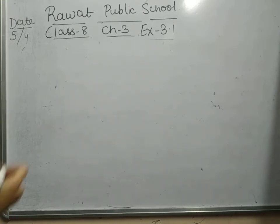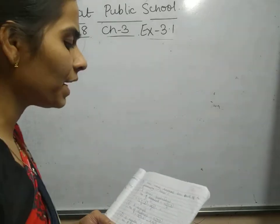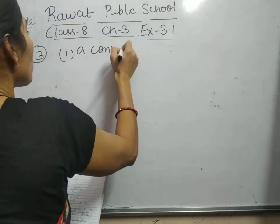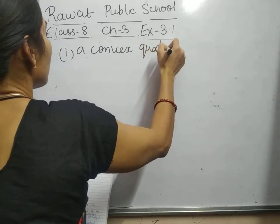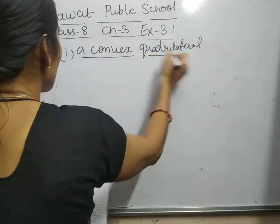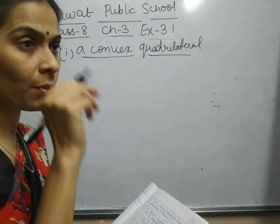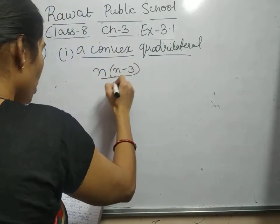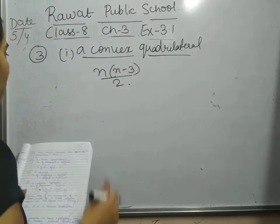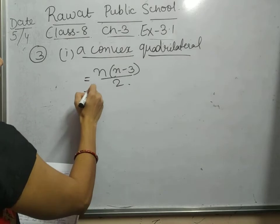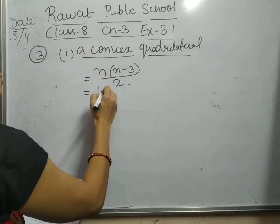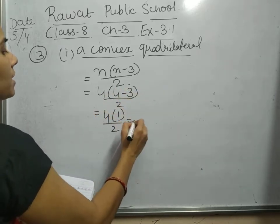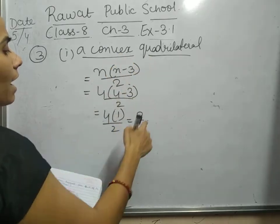Question 3 asks how many diagonals each polygon has, using the formula n(n−3)/2. For a convex quadrilateral (n=4): 4×(4−3)/2 = 4×1/2 = 2 diagonals. So a convex quadrilateral has 2 diagonals.